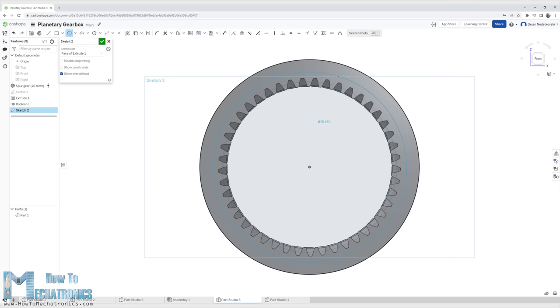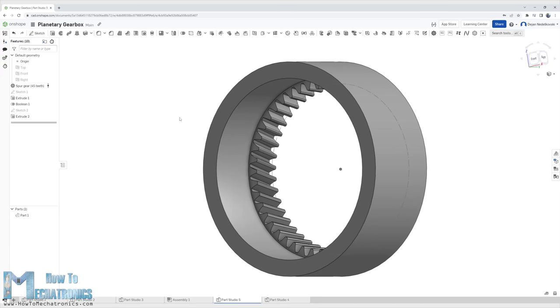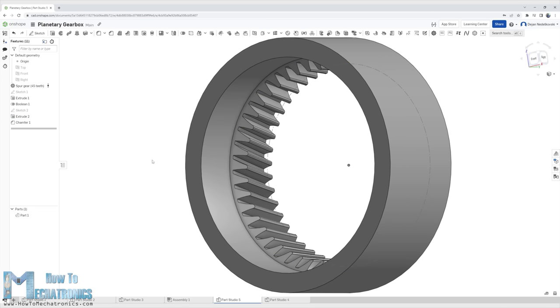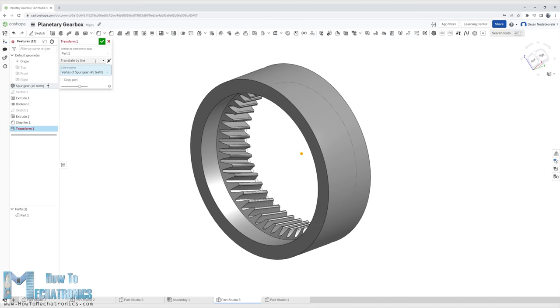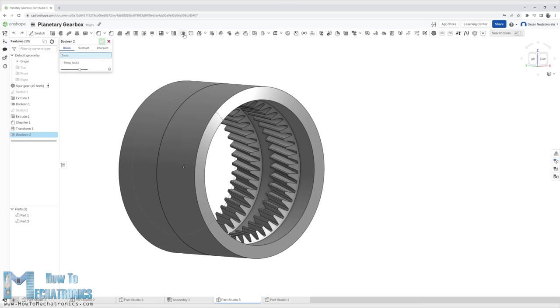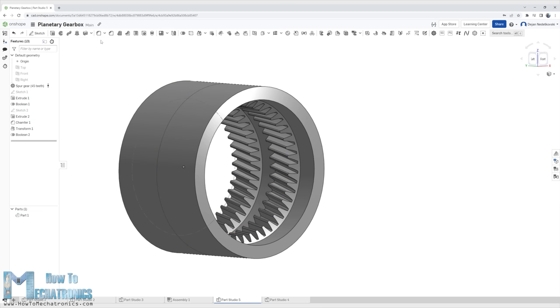As we need the ring gear to be stationary, I continued to model this part as a housing of the gearbox. I added chamfers to one side of the teeth to be easier to 3D print them without support. I made the second stage by making a copy of the part with the transform function and using the boolean function made a union of the two parts and got a single part again.